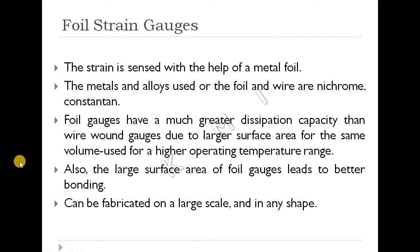In the Foil Strain Gauge, we use metal foils rather than wires. The strain is sensed with the help of metal foil, which is why it is also called the metal foil strain gauge. The metals and alloys used for the foil and wires are nichrome or constantan.